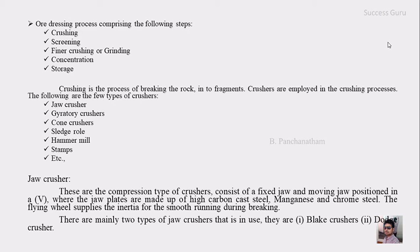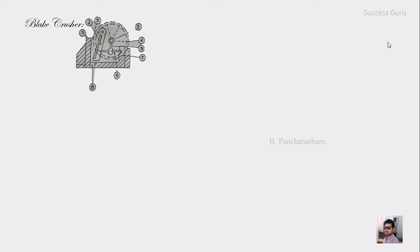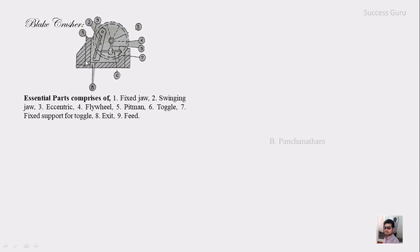The Blake crusher consists of: the fixed jaw (number one), the swinging jaw (number two), the eccentric (number three), the flywheel (number four), the pitman (number five), the toggle (number six), the fixed support for the toggle (number seven), the exit gap (number eight), and the feed opening (number nine). Whatever you put in at the feed will move through and come out at the exit.